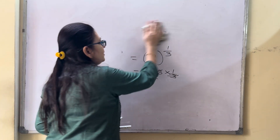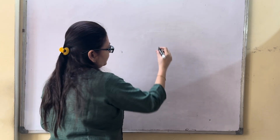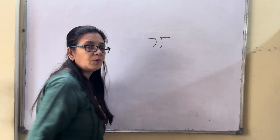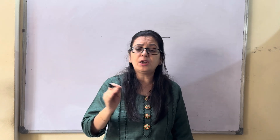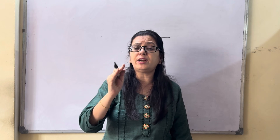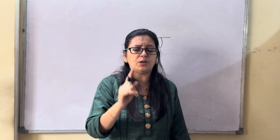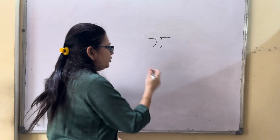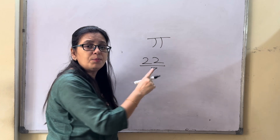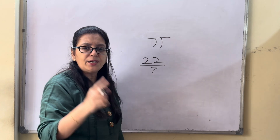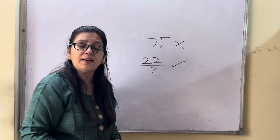Now let's take a very important example — pi. Kids, always remember pi is an irrational number because it is non-terminating: you get 3.14 and so on. It is non-terminating, so it is an irrational number. But if they give you 22 upon 7, that is a rational number because the denominator is not equal to 0. So 22/7 is rational, but pi is irrational.